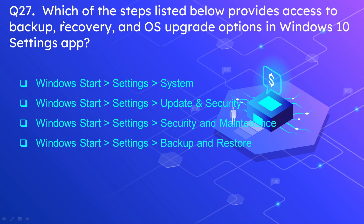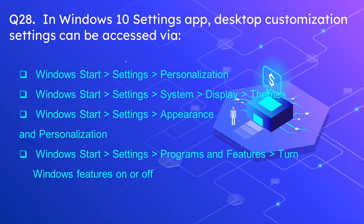Question number 27: Which of the steps listed below provides access to backup, recovery, and OS upgrade options in the Windows 10 Settings app? The correct option is Windows Start, then Settings, then Update and Recovery. Question number 28: In the Windows 10 Settings app, desktop customization settings can be accessed via Windows Start, then Settings, then Personalization.